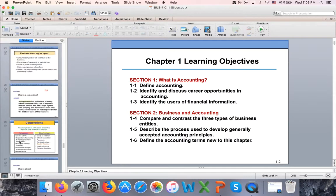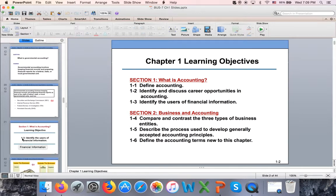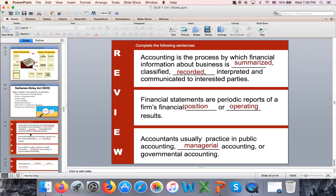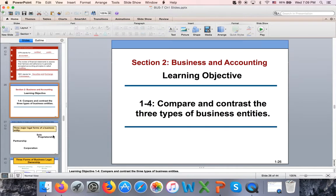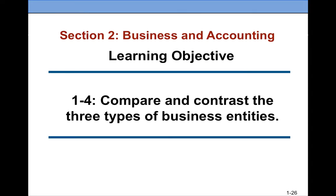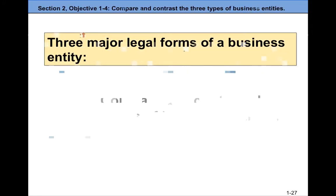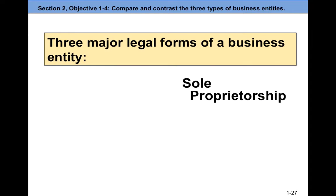You might have studied this information about forms of business entities — if you took the Introduction to Business course or a Business Law course, so for some of you it will be just a review. The three major legal forms of business entity include a sole proprietorship, which has one owner. This is what we study in this class — it has the simplest accounting structure because of the simplicity of its ownership.